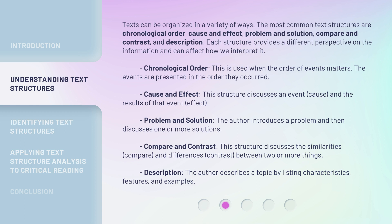Chronological order: This is used when the order of events matters. The events are presented in the order they occurred. Cause and effect: This structure discusses an event — the cause — and the results of that event — the effect.